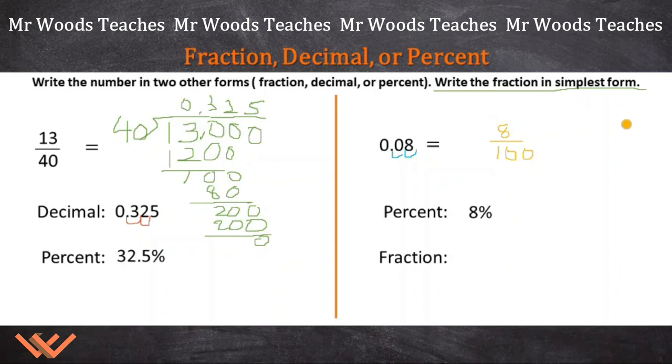But wait, are we done? No, because it says here, write the fraction in the simplest form. All right. So now I'm looking at this. I'm like, okay, I know that four goes into eight two times. So this is going to be equal to two. And then I know that 100 divided by four is 25.